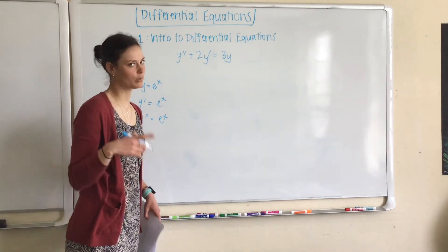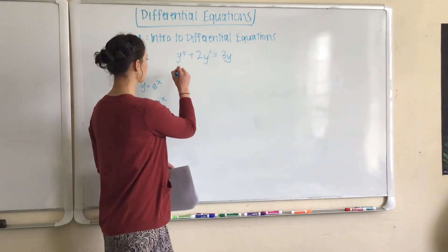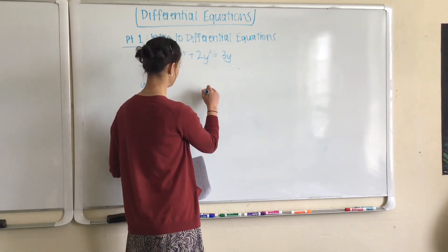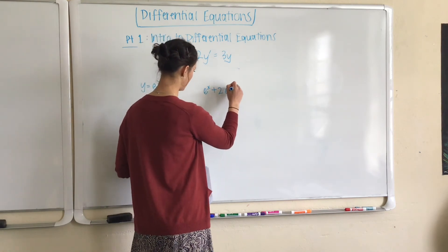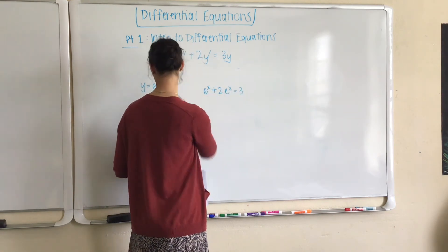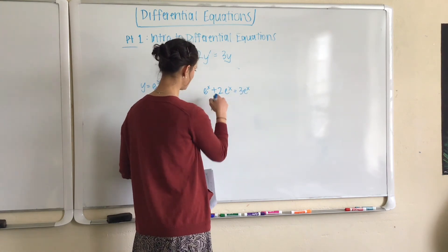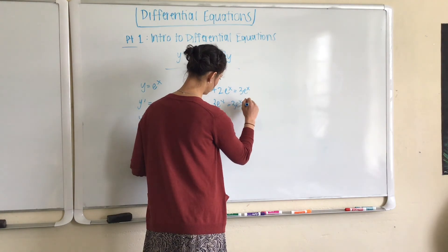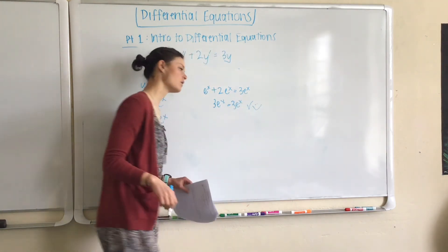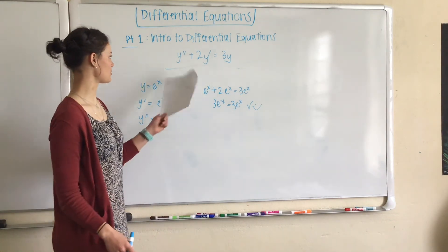Alright, and now let's plug these into the original equation. Again, y'', e^x + 2 times y', 2 times e^x = 3 times y, 3e^x. 1 plus 2 is 3e^x = 3e^x. Check. Smiley face. All checks out. Bam. Again, we have verified two solutions to this differential equation.